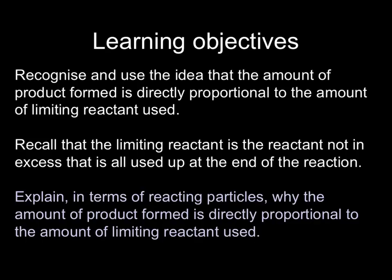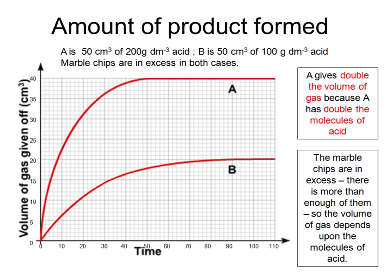Finally, in this tutorial, the idea that the amount of product you get is related to the amount of reactant that you use, and if one of the reactants runs out first, that's called the limiting reactant, and that's the one that decides how much product you get. In this first example, the marble chips are reacting with acid, but the marble chips are in excess in both cases. That means there's too much of them. And that means that the acid is the limiting reactant.